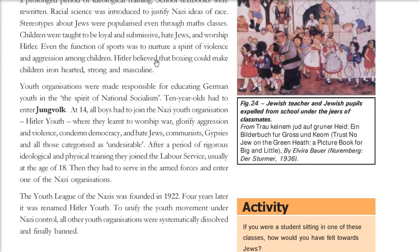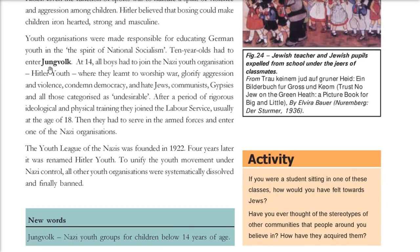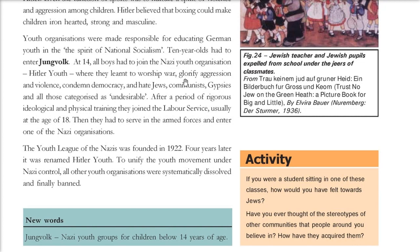Everywhere it was anti-Jewish and pro-Hitler. Hitler believed children should be iron-hearted, strong, and masculine through boxing. Youth organizations were given the responsibility to educate German youth in the spirit of National Socialism. At 10 years old, children had to enter the Jungvolk; at 14, they had to join the Hitler Youth organization. They learned to worship war, glorify aggression and violence, condemn democracy, hate Jews, communists, and Gypsies — all undesirable categories. At 18, they would serve in the armed forces.